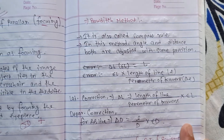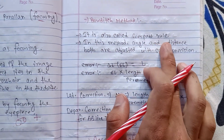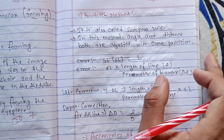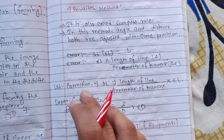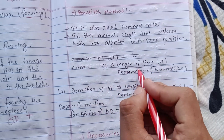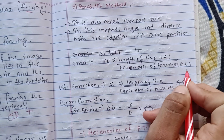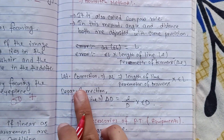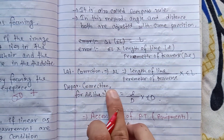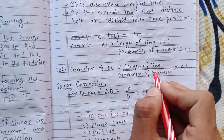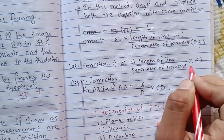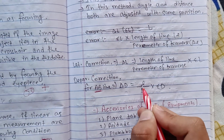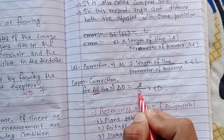Bowditch's rule — also called the compass rule. In this method, angles and distances are both adjusted with the same precision. The correction to latitude equals summation of latitude multiplied by the length of the line divided by the perimeter of the traverse. The correction to departure equals summation of departure multiplied by the length of line AB divided by the total departure.